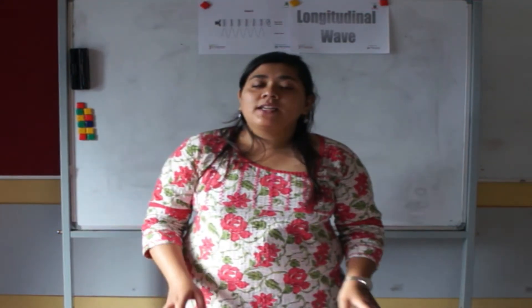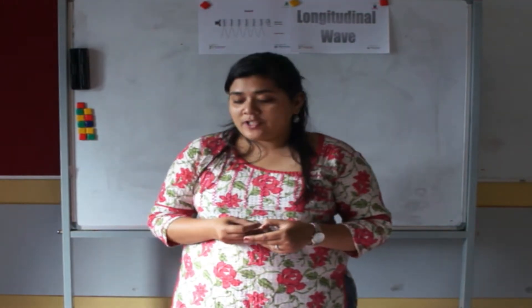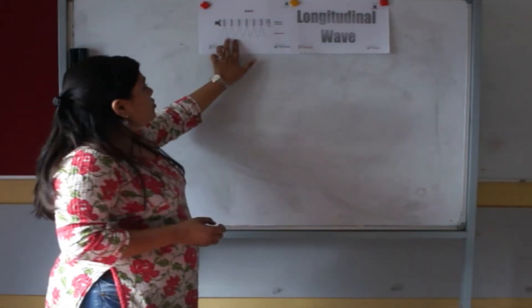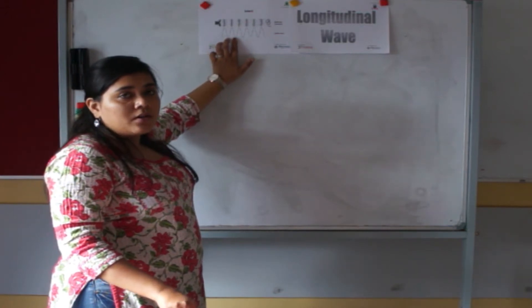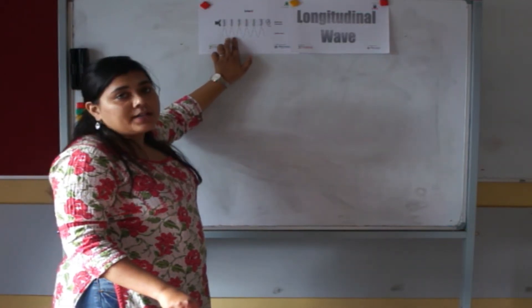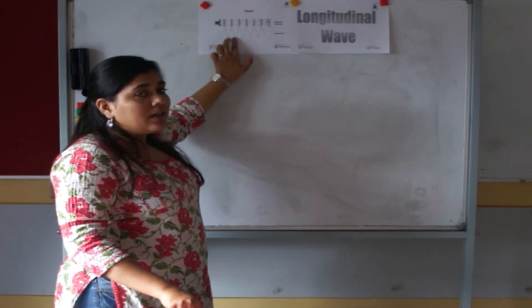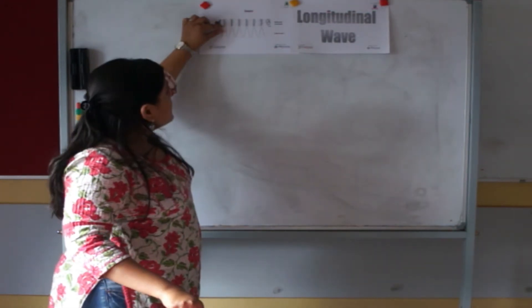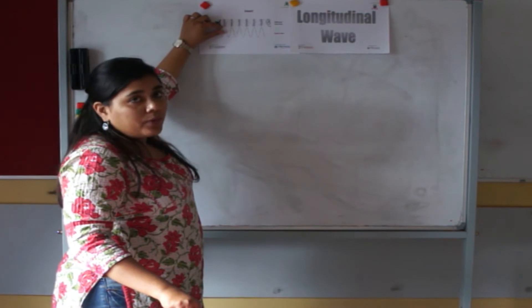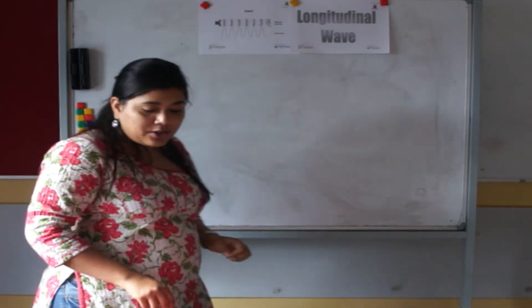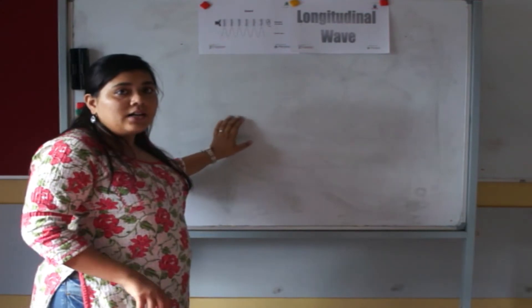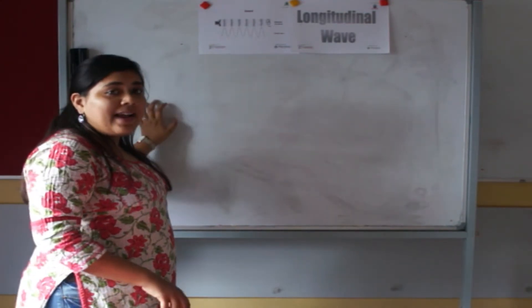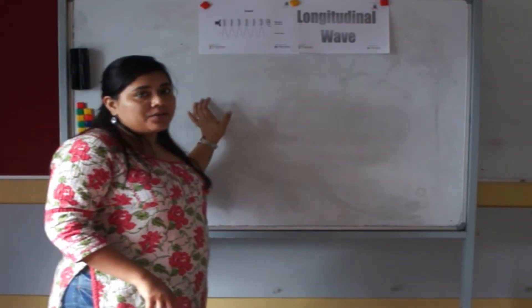Give each group a measuring tape. Groups measure the distance between two consecutive highs or lows of the wave, and also the distance from the middle to the top of the wave. Both measurements are written on the board as 'height of wave' and 'distance between the highs or lows'.